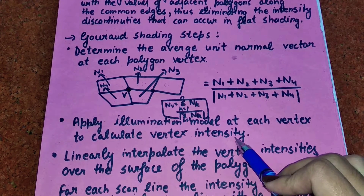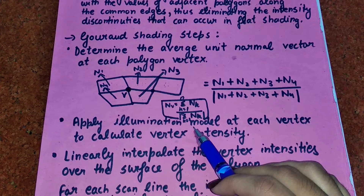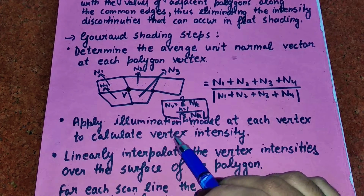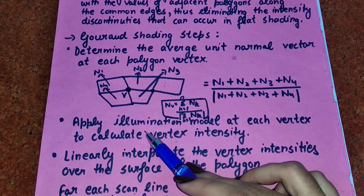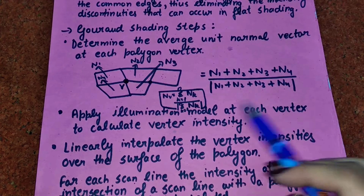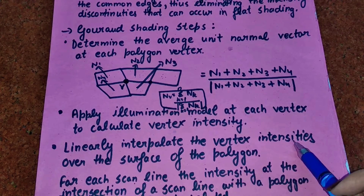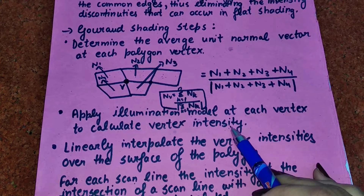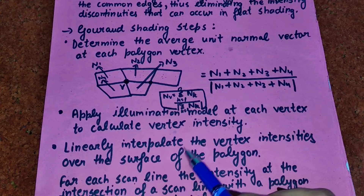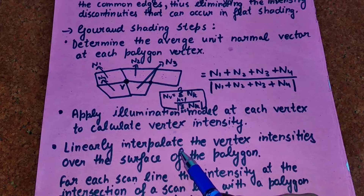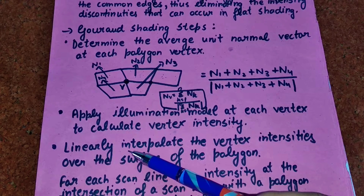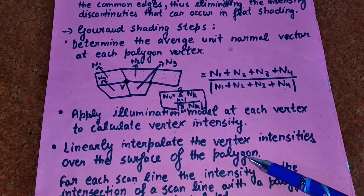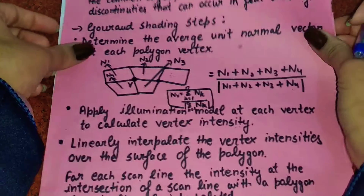The second step is to apply the illumination model at each vertex to calculate the vertex intensity. The illumination model in computer graphics calculates the intensity at a given point. The third step is to linearly interpolate the vertex intensity over the surface of the polygon. After calculating the intensity at each vertex, we linearly interpolate across the polygon surface.